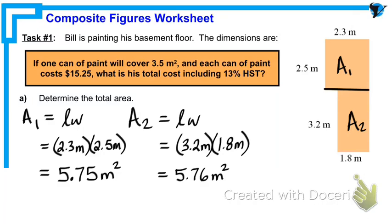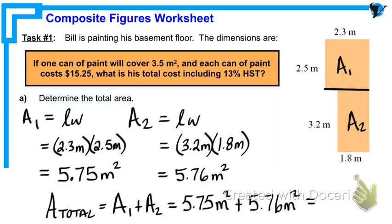Multiplying our lengths times our widths separately will give us 5.75 meters squared and 5.76 meters squared. So we'll now take these two results and add them together to get the total area of the entire composite figure. We should end up with a total area of 11.51 meters squared.